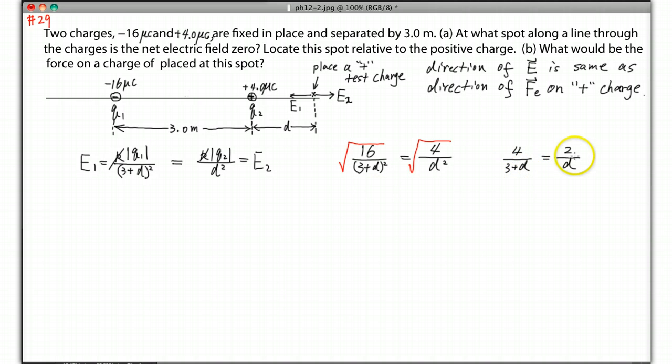Let's do cross multiplication. We should get 2(3+D) equals 4D. And you got 6 equals 2D, and D equals 3.0 meters. You can plug in and check: if you put 3, you get 4 over 6 and 2 over 3. That's good. So we found the spot. It should be 3 meters away from the positive charge, on the line.